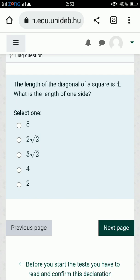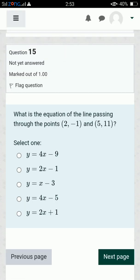Next one is: The length of the diagonal of a square is 4. What is the length of one side?